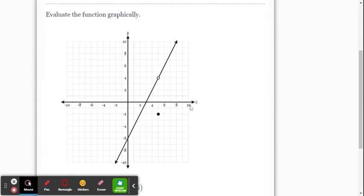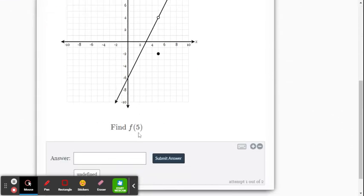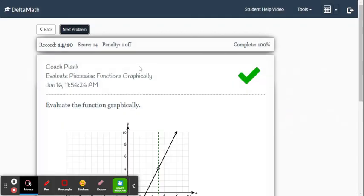How about this one? We've got a line here. It says find f of 5. When you input 5, the output is that point, which is negative 2.